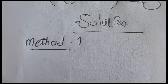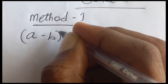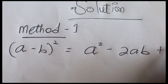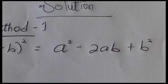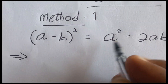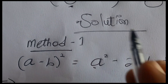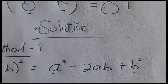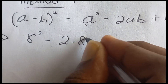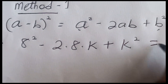Let's start with Method 1. We are going to use (a minus b) squared, which is equal to a squared minus 2ab plus b squared. Our equation variable: our a is 8 and our k is the b.